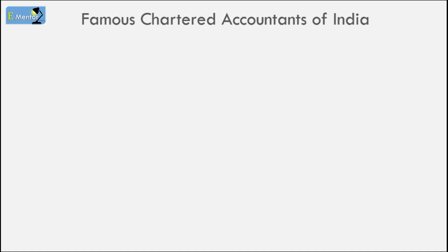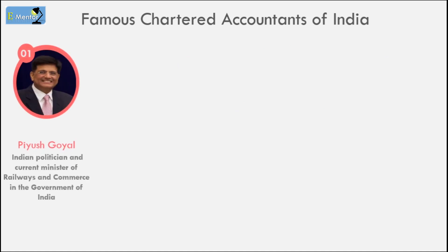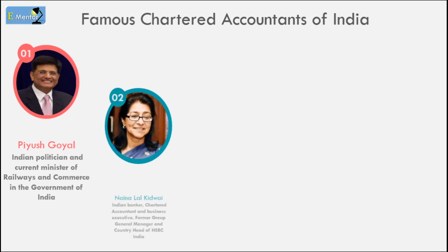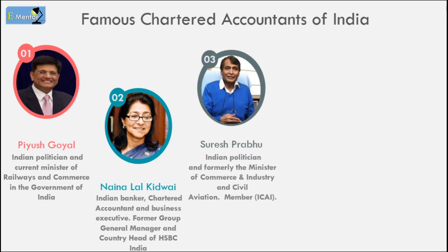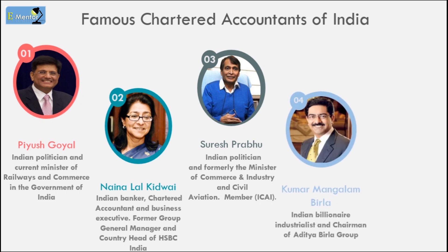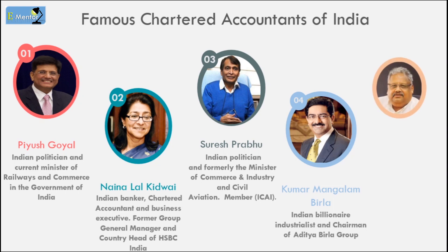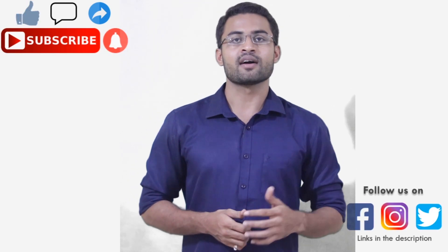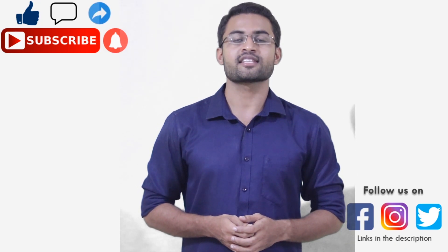Now we will know about some well-known and successful CAs in India. First, Piyush Goyal — he is a politician and has served as India's Commerce Minister and Railway Minister. Naina Lal Kidwai is a very famous banker and was the head of HSBC India. Suresh Prabhu is also a politician and has served as Commerce Minister and Civil Aviation Minister, and is a member of the Institute of Chartered Accountants of India. Kumar Mangalam Birla is a well-known businessman and Chairman of the Aditya Birla Group. Rakesh Jhunjhunwala was a very big investor and trader. So friends, this is where our video ends. To watch such videos, please subscribe to the channel, like, comment, and share with as many people as possible. Thank you so much.